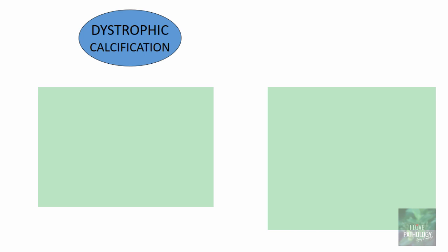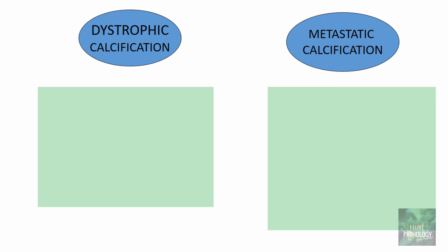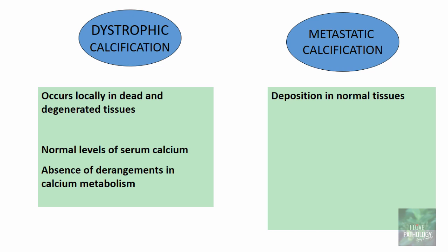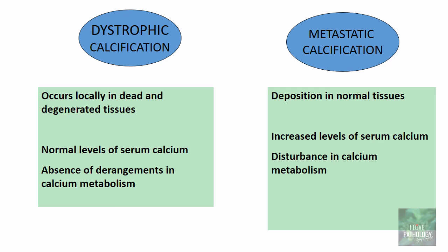The types of pathologic calcification are: one, dystrophic calcification and two, metastatic calcification. Dystrophic calcification occurs locally in dead and degenerated tissues, whereas metastatic calcification occurs in normal tissues. In dystrophic calcification the serum calcium levels are normal because there is no derangement in calcium metabolism, whereas in metastatic calcification there are increased serum calcium levels due to disturbance in calcium metabolism, as seen in hyperparathyroidism and bone diseases.